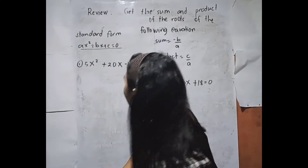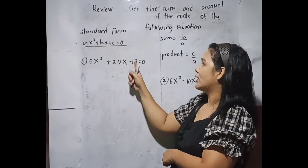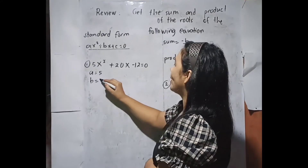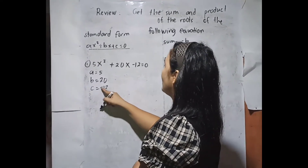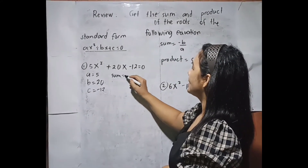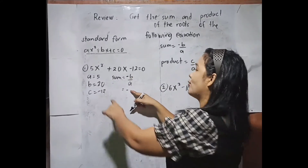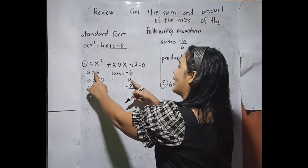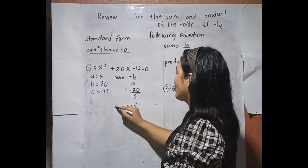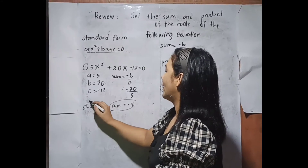So, how to do that? Given number 1, it is already arranged in standard form — may x squared, may x, and then may constant na number. So letter A is 5, letter B is 20 (yung may x), and C is negative 12. Using the sum formula, negative b over a — so negative 20 all over 5 — divide 20 by 5, that is negative 4. That is our sum.